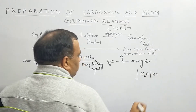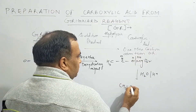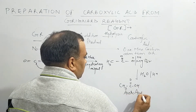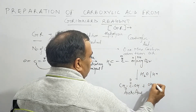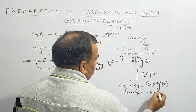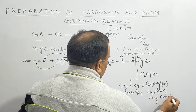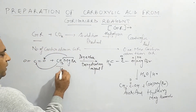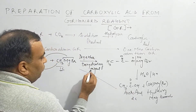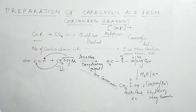On hydrolysis with H₂O in the presence of H⁺, we get CH₃COOH (acetic acid) plus hydroxy magnesium bromide. The Grignard reagent used here contained one carbon atom, and the acid obtained is a two-carbon acid — there is an increase of one carbon atom. Let us take one more example.